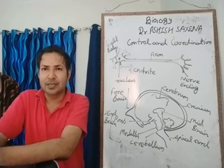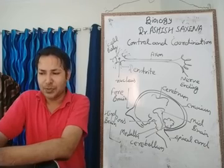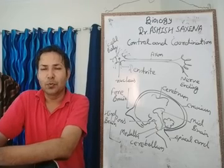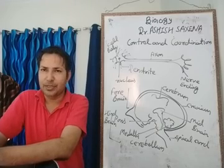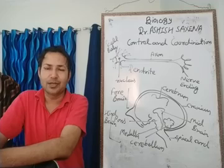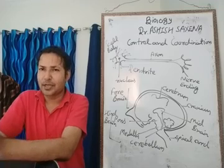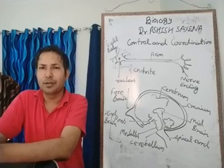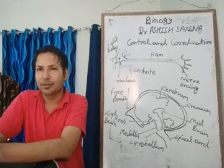The testes produce testosterone and the ovary produces estrogen. These hormones regulate secondary sexual characteristics in the male and female body.